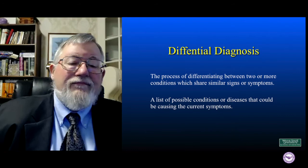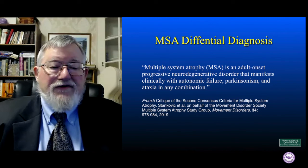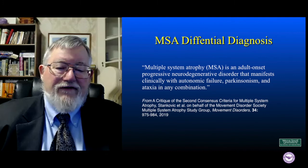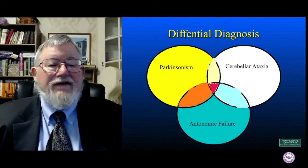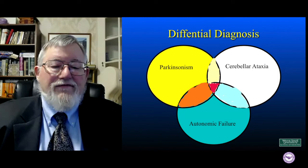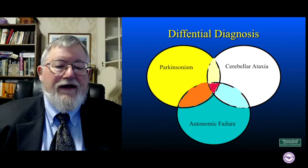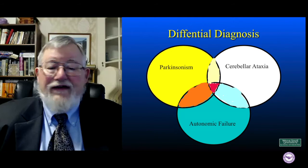Multiple system atrophy is an adult-onset progressive neurodegenerative disorder that manifests clinically with autonomic failure, Parkinsonism, and ataxia in any combination — and that's kind of the key here. I have this Venn diagram with Parkinsonism, cerebellar ataxia, and autonomic failure, and where they all overlap in the middle, you have this little red triangle. You would think that if you're in that red triangle, you must have multiple system atrophy — you've got all three in some combination.